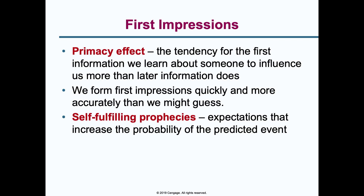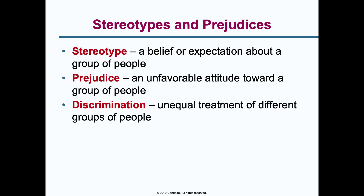Our observations of people and the inferences we make lead to stereotypes and prejudices. A stereotype is a belief or expectation about a group of people. A prejudice is an unfavorable attitude toward a group. The key distinction is belief versus attitude. Discrimination is unequal treatment — an actual action. So the keywords are: stereotype equals belief, prejudice equals attitude, and discrimination equals treatment.